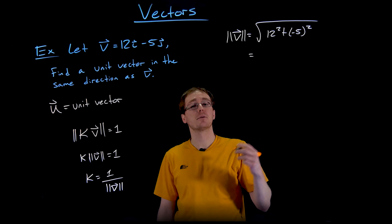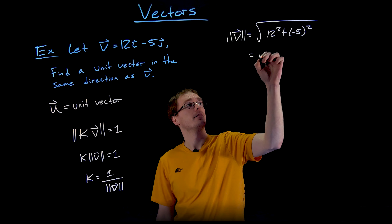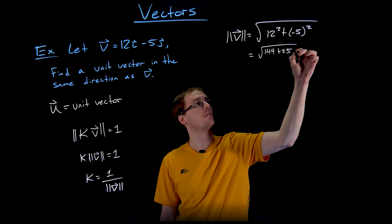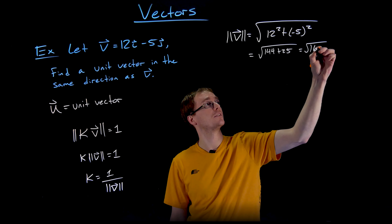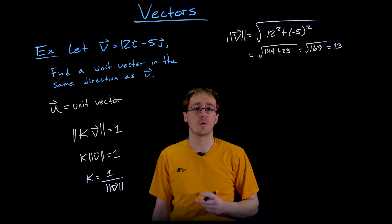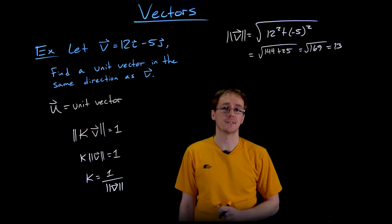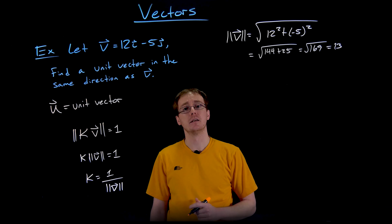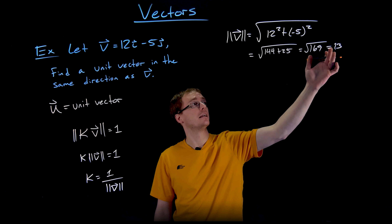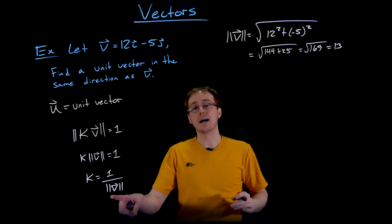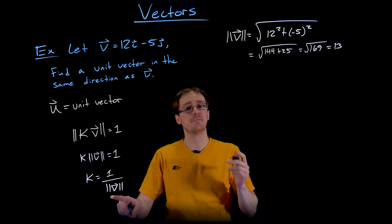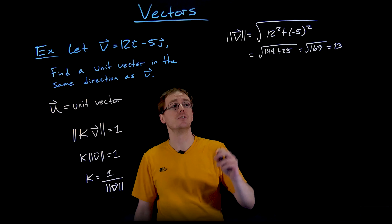So it'll be the square root of 12 squared plus negative 5 squared — that's the square root of 144 plus 25, or the square root of 169, which happens to be a perfect square. The square root of 169 gives us 13. So now we know the magnitude of our vector v is 13. We have to divide our vector v by this magnitude, or divide each component of v by 13, to create our unit vector u.